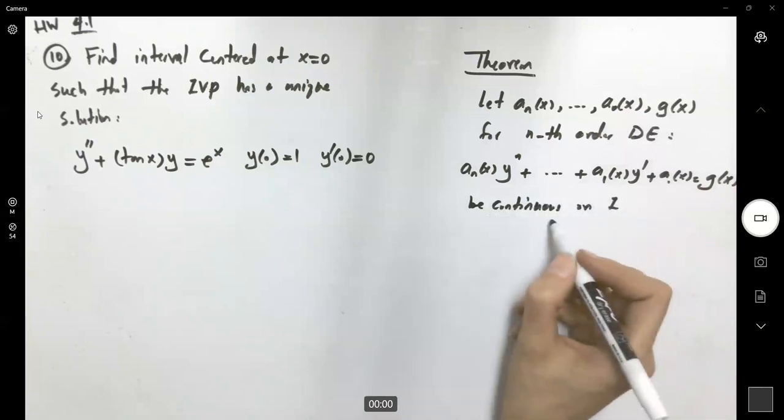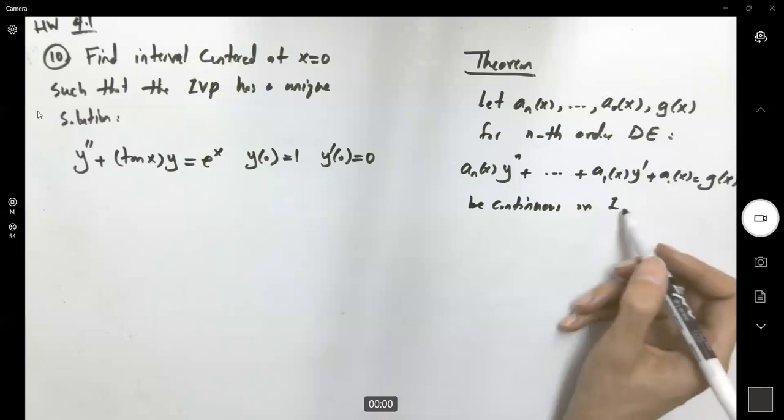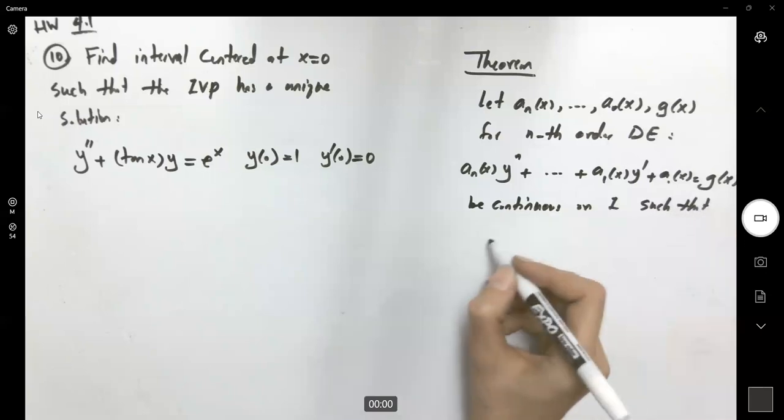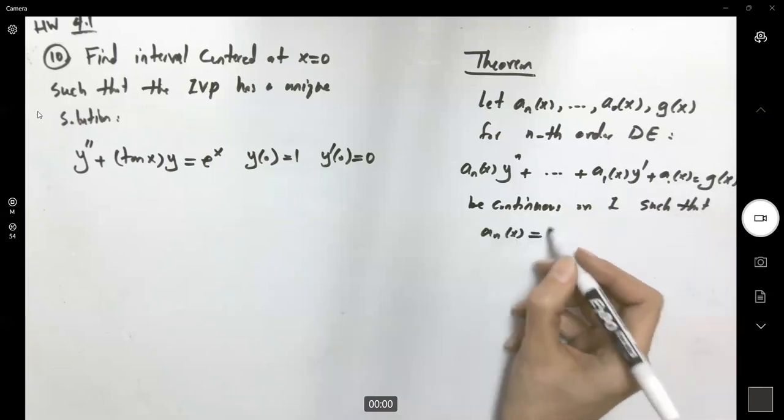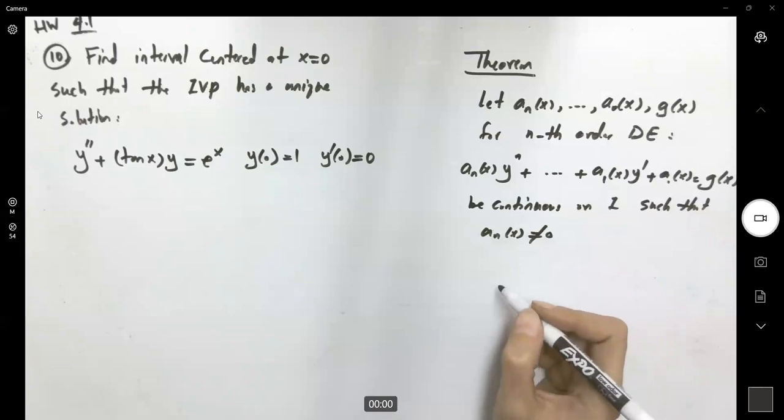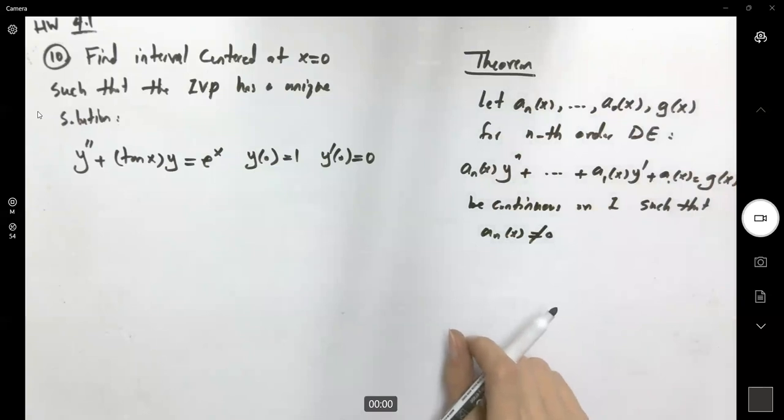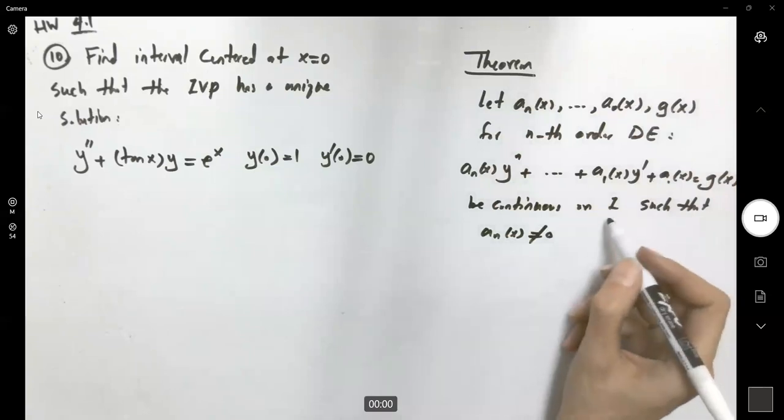on an interval I. Continuity is the key we're going to focus on. On interval I where the leading coefficient a_n is not zero, this theorem guarantees a unique solution for the initial value problem on I.